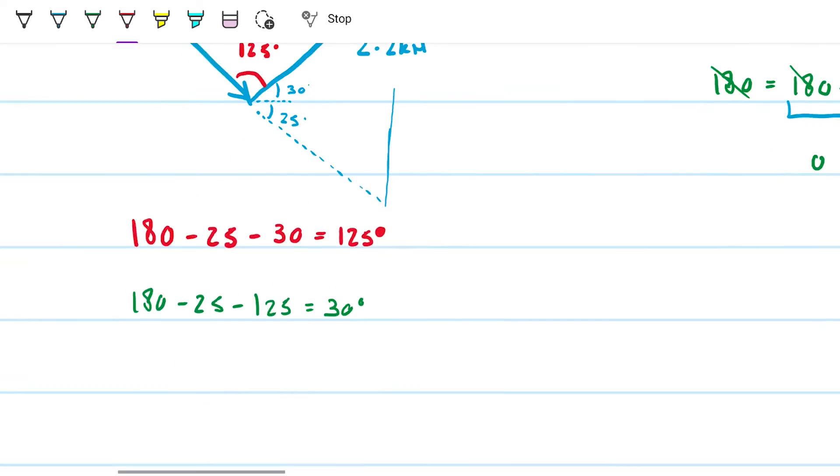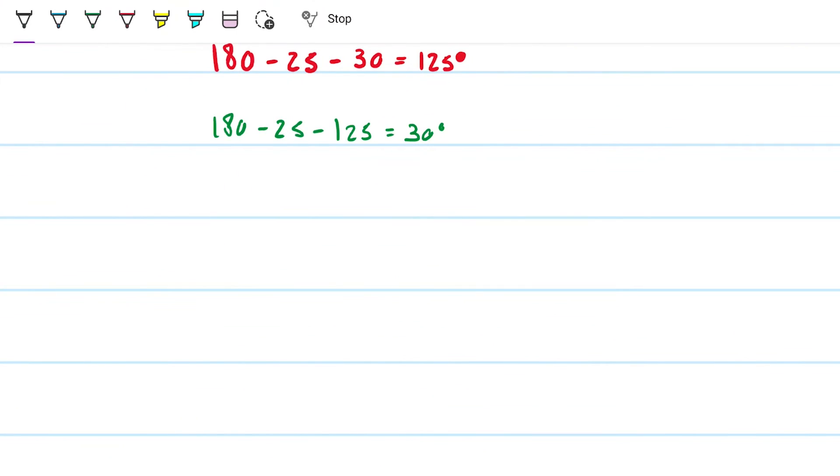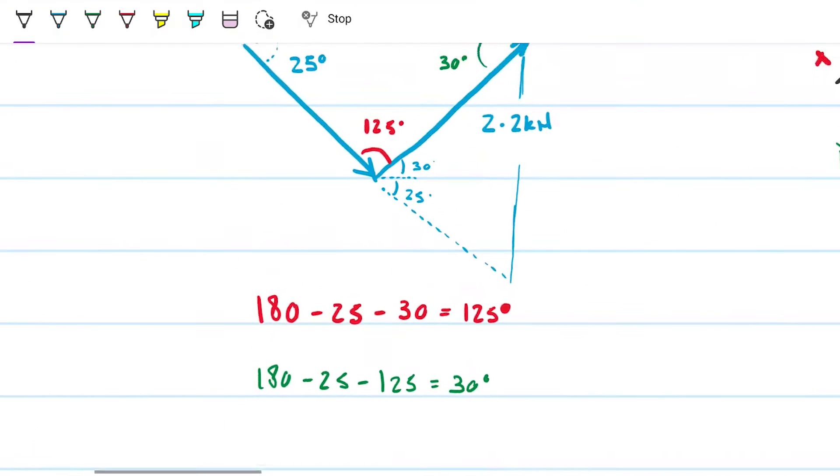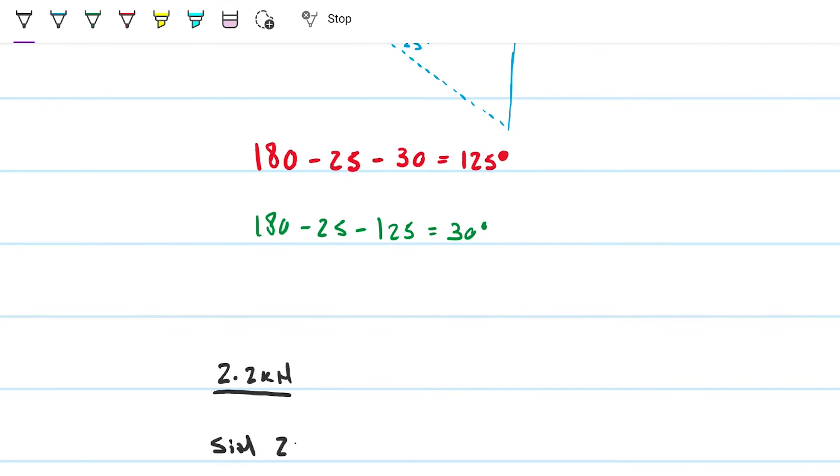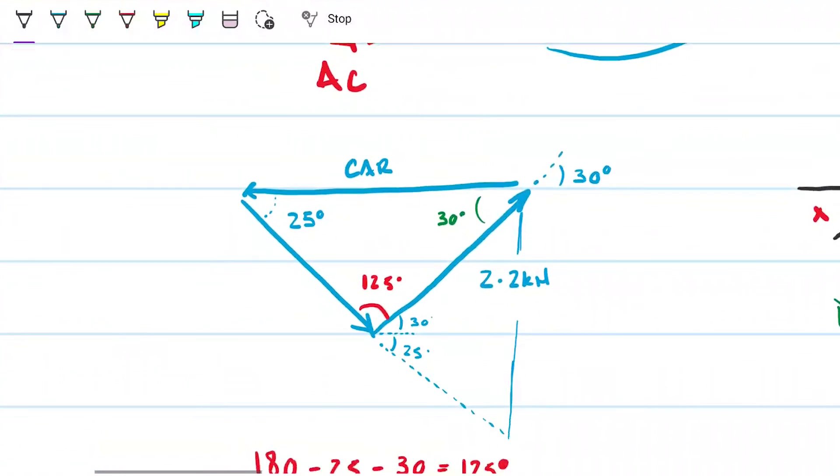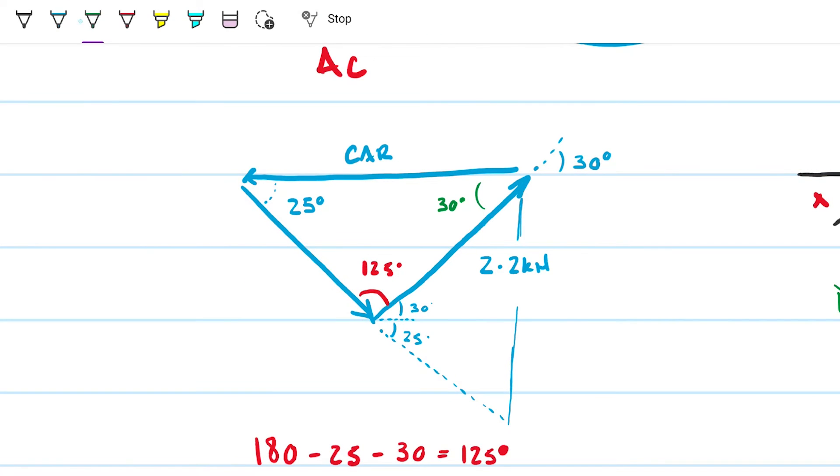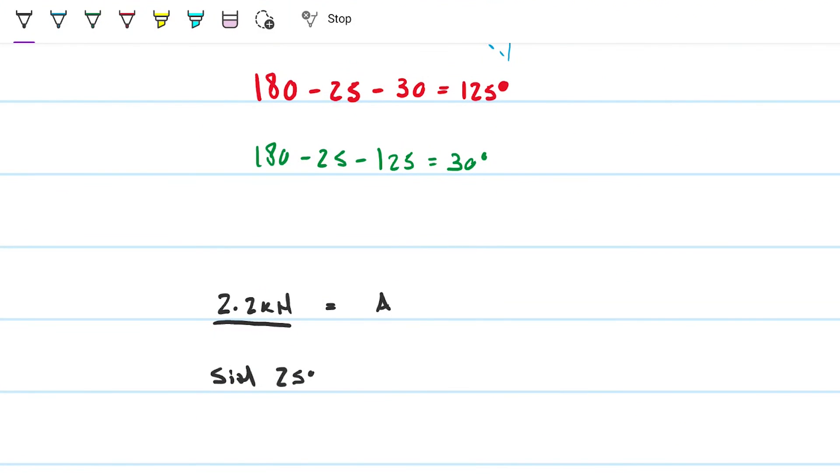Brilliant. If this is the case, then we can set up our law of sines, which will say that 2.2 kilonewtons divided by the sine of, let's be sure, sine of the opposite of 25 degrees, will be equal to AB, which I'm looking for, right? No, AC I'm looking for. Let's put it on here. AC. We go to AC divided by its opposite angle, so that's sine of 30, which will be equal to the car sine of 125.